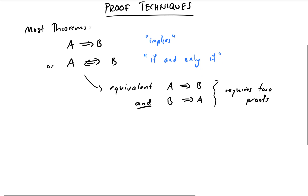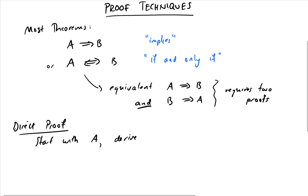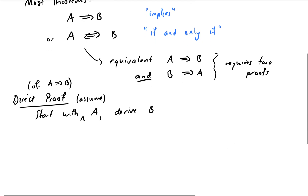Our first proof technique is the direct proof. In a direct proof we start with A — meaning we assume A — and then we derive B. So we assume that statement A is true and show that that means statement B is also true. This is a direct proof of A implies B, and it's the best style if you can do it, as it's considered good form and usually the most clear to understand.